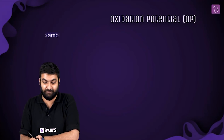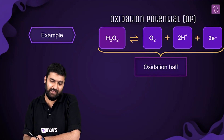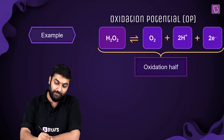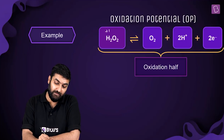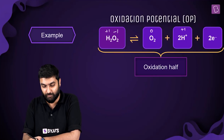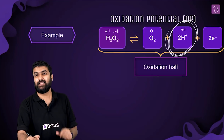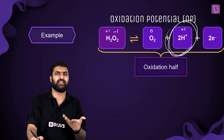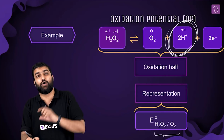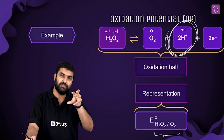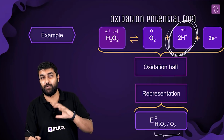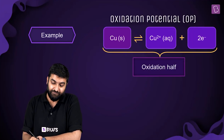Let's look at another reaction to illustrate what to include and exclude. Hydrogen is in +1 oxidation state on both sides, so hydrogen is not getting oxidized or reduced. We won't include it. Oxygen's oxidation state is changing, so we represent it as H₂O₂ slash O₂. The parts not undergoing oxidation or reduction — and electrons — are not included.